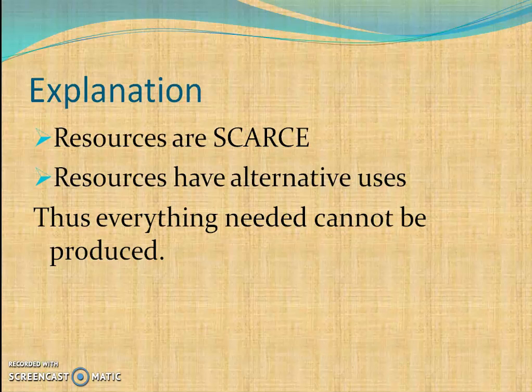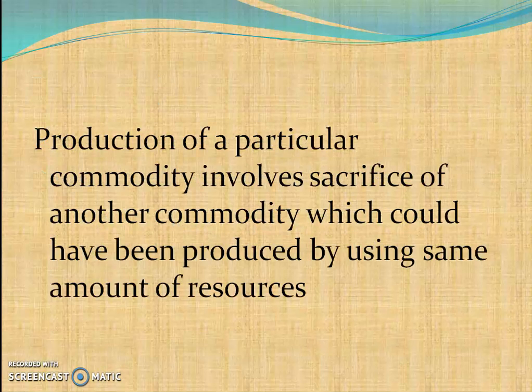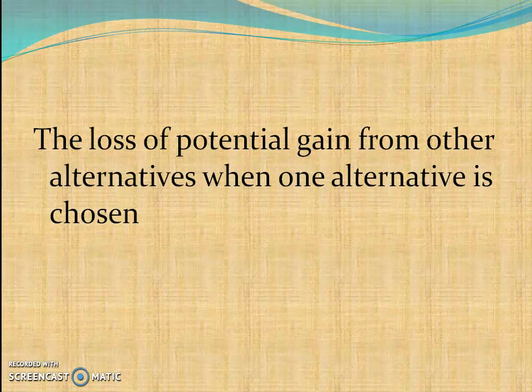Everything needed cannot be produced at the same point in time. So opportunity cost is the next best alternative that is forgone. Production of a particular commodity involves the sacrifice of another commodity which could have been produced using the same amount of resources — it is the loss of potential gain from other alternatives when one alternative is chosen.